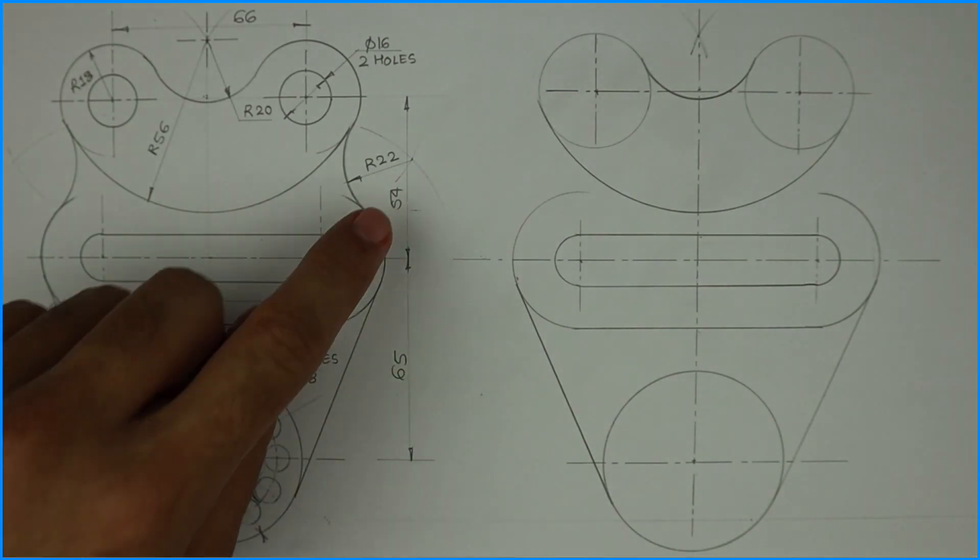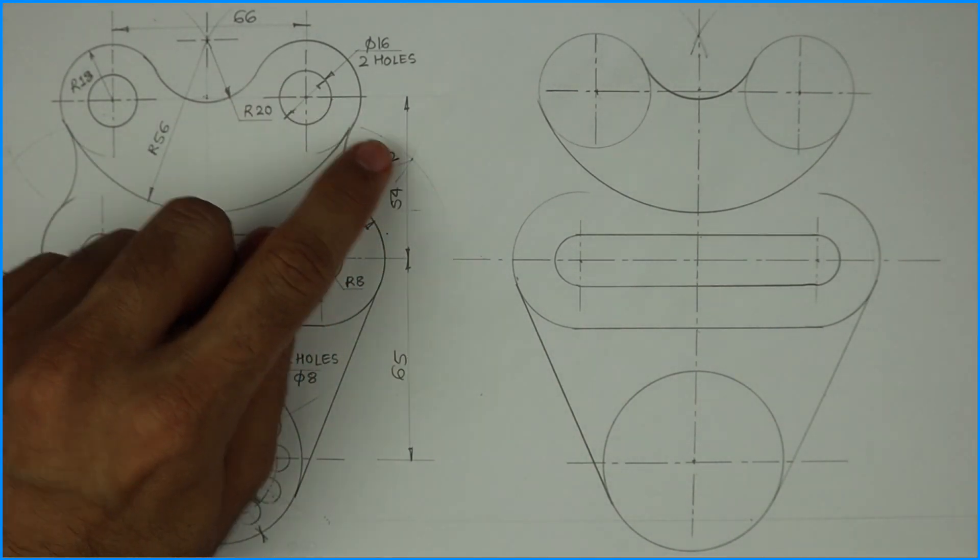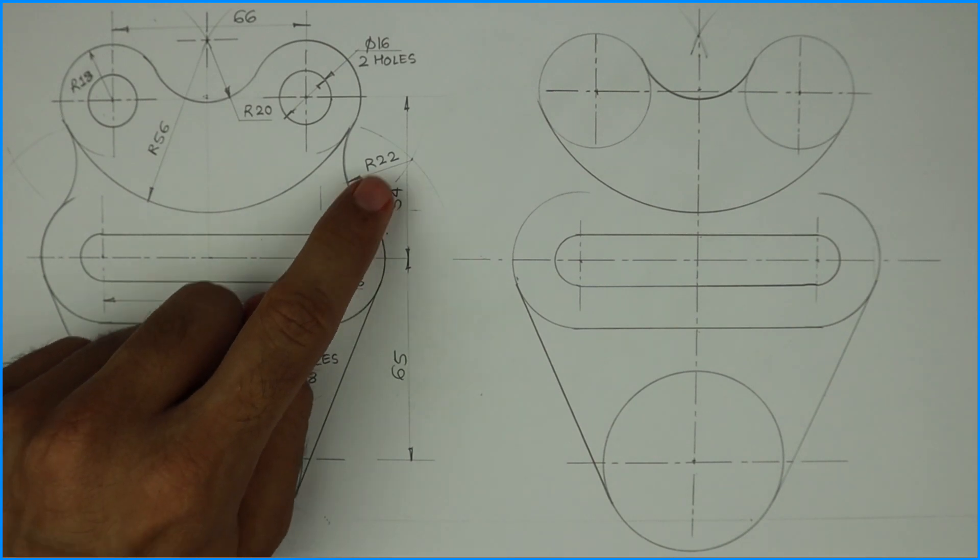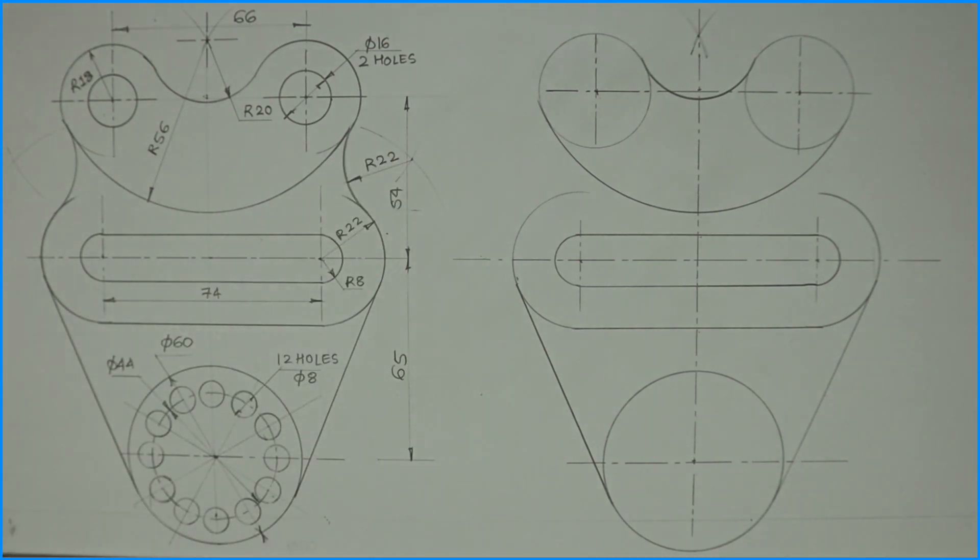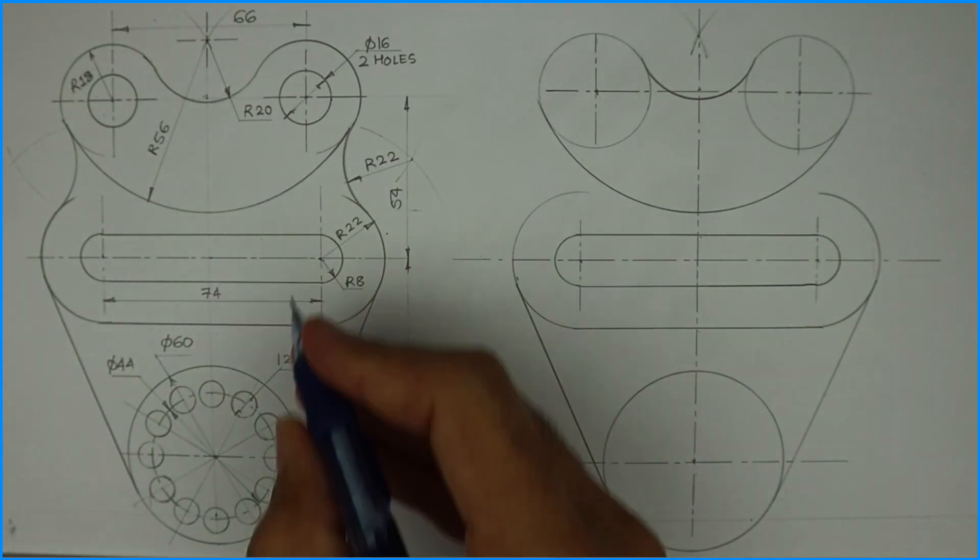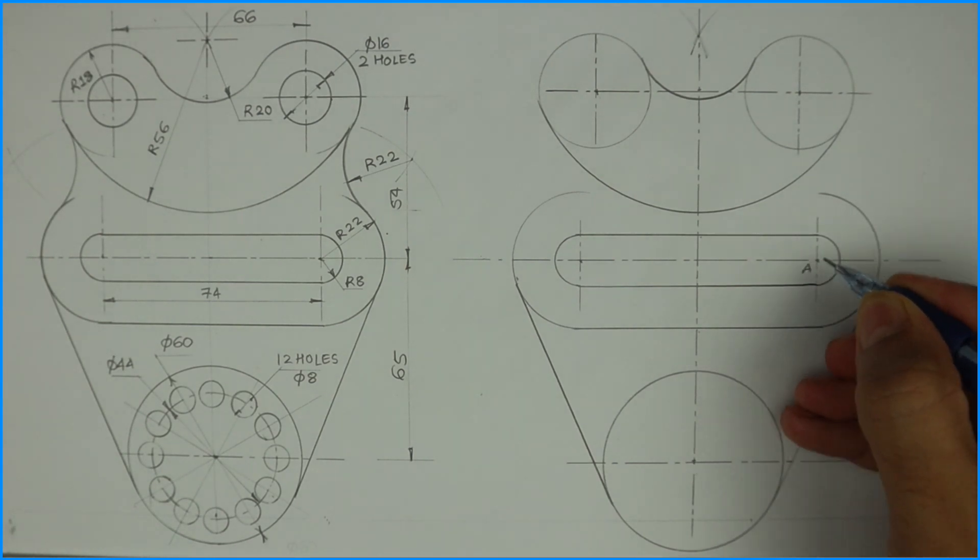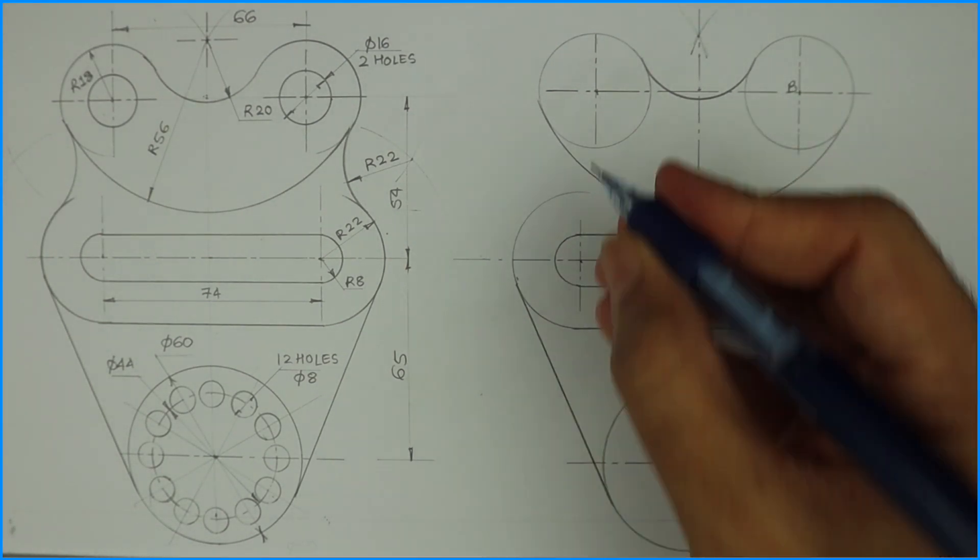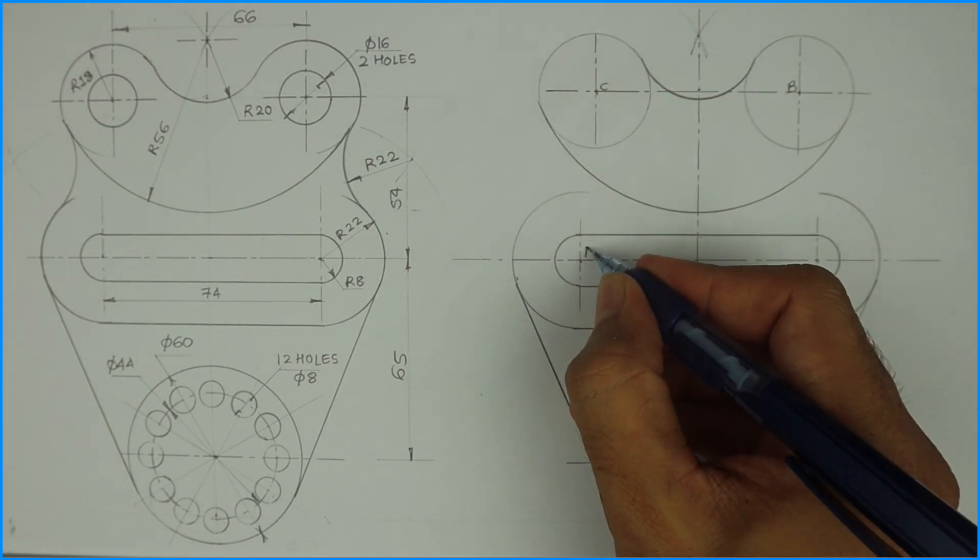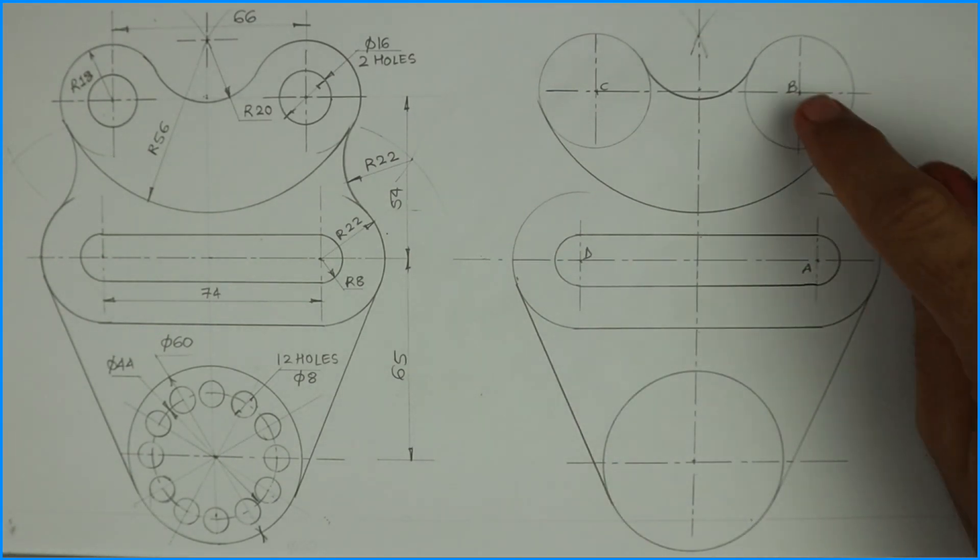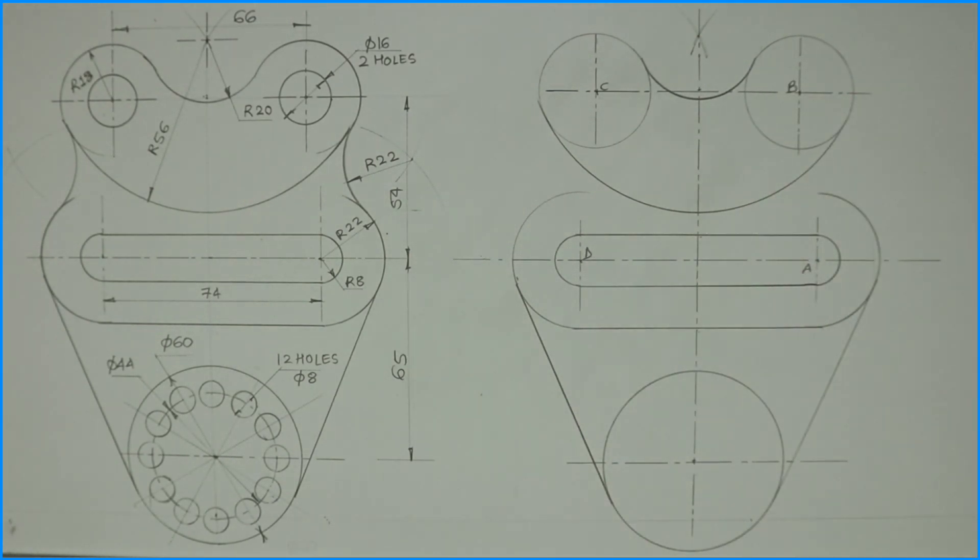Now after this, radius 22. From here external and from here also external, the radius 22 is attaching 22 and 18 also. So I'm labeling A, B, C, and D. From A I will cut how much? 22 plus 22. And from B I will cut 18 plus 22.